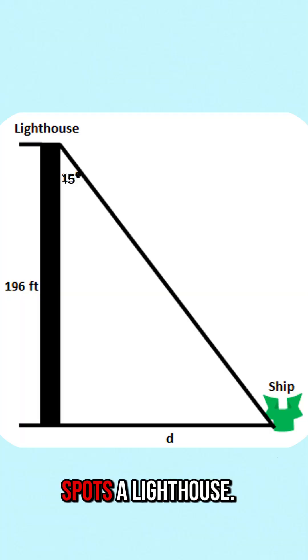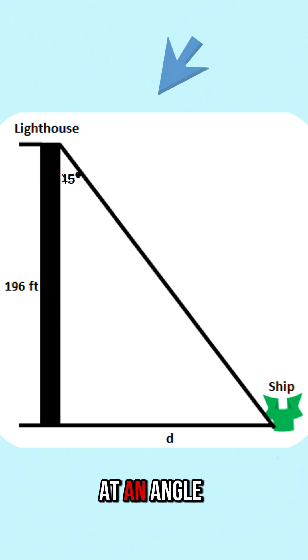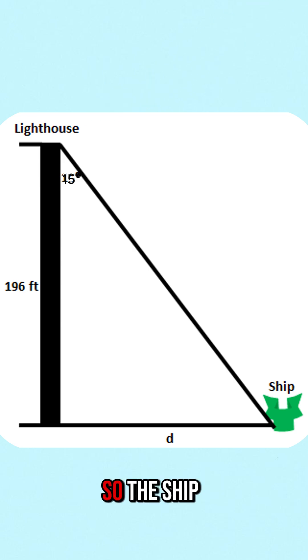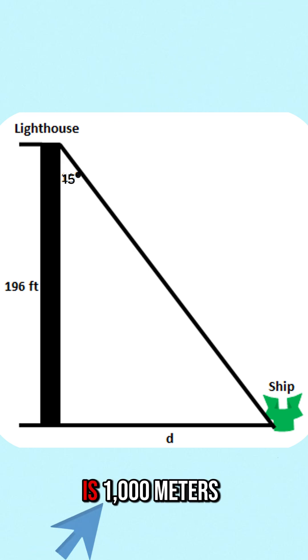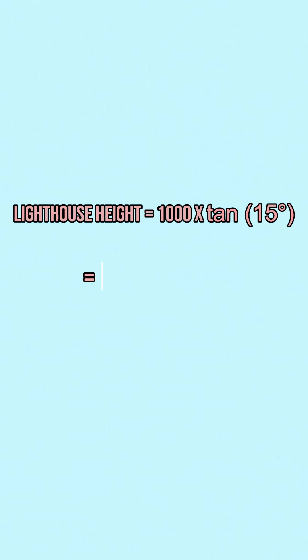A ship spots a lighthouse. The top is at an angle of depression of 15 degrees. The ship is 1,000 meters from the shore. So the lighthouse height will be 1,000 times tan of 15, which is around 260 meters.